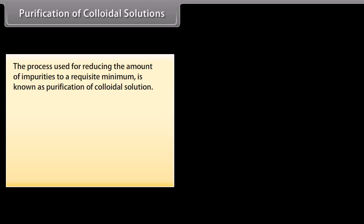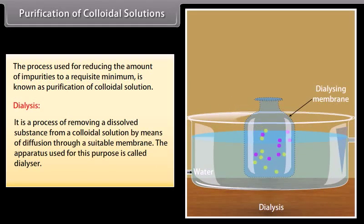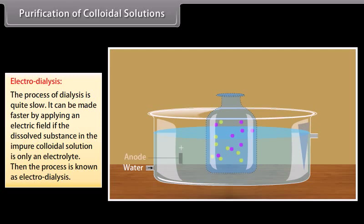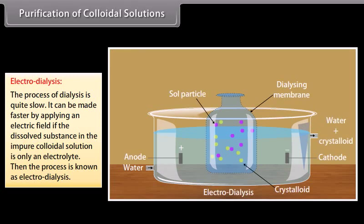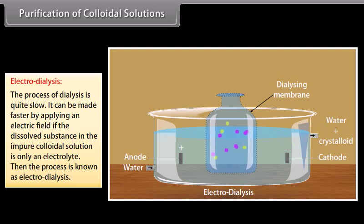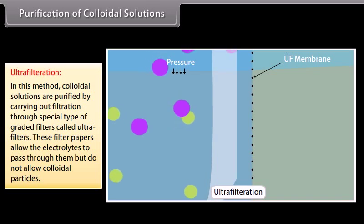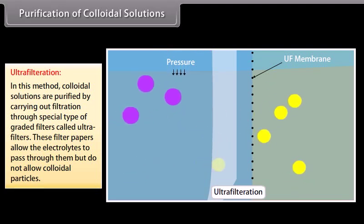The process used for reducing the amount of impurities to a requisite minimum is called purification of colloidal solution, which can be done by: dialysis — removing dissolved substances from colloidal solution by diffusion through a suitable membrane using a dialyzer; electrodialysis — a faster form of dialysis achieved by applying an electric field when the impurity is an electrolyte; and ultrafiltration — purifying colloidal solutions by filtration through special graded ultrafilters that allow electrolytes to pass but retain colloidal particles.